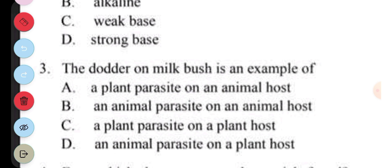Question 3. A dodder on a milk bush is an example of: A. A plant parasite on an animal host. B. An animal parasite on an animal host. C. Plant parasite on a plant host. D. An animal parasite on a plant host. The answer to question 3 is C, plant parasite on a plant host.